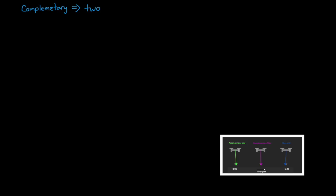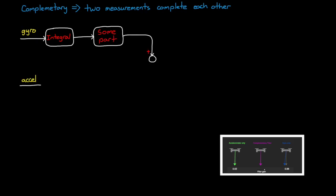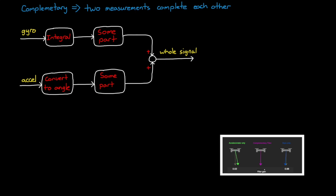Complementary in this sense means that we combine the two measurements in a way that complete each other. Or in other words, we take some part of one measurement and add it to the complementary part of the other so that the sum of the two parts is still one whole measurement. In our case, we'd want to keep the short term benefits of the gyro and add them to the long term benefits of the accelerometer.